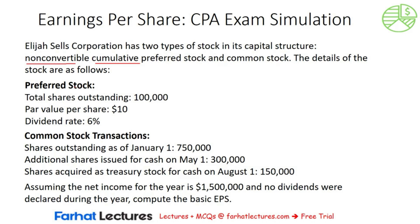It's going to reduce the income available to common shareholders. The details of the stock are as follows. We have information about preferred stock: the number of total shares outstanding, par value per share, and dividend rate. We also have information about common stock transactions: the stock outstanding at the beginning of the year, additional shares issued — those are going to add to our beginning balance — and shares acquired as treasury stock for cash on August 1st, which is going to reduce the outstanding balance. The outstanding balance is the difference between shares issued and treasury stock.